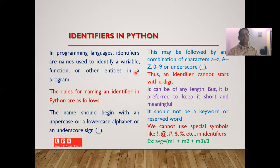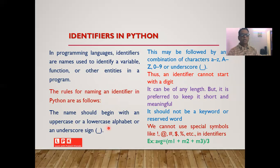There is a concept of identifier in Python. Identifiers are names used to identify a variable, function, or several other entities used within a Python program. Whenever we want to name a variable or a function, we need to make use of an identifier. The identifier name should begin with an uppercase or lowercase alphabet or an underscore sign, and may consist of characters from a–z, A–Z, digits 0–9, and underscore.